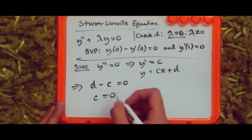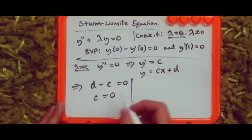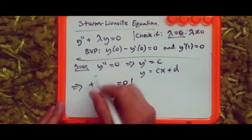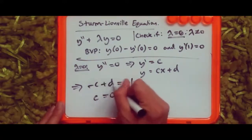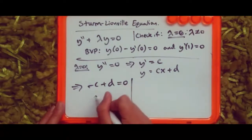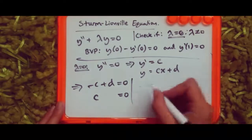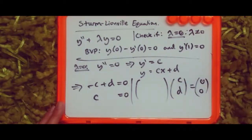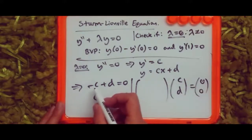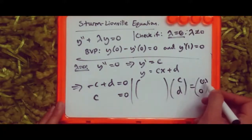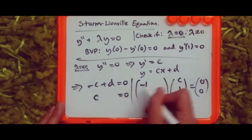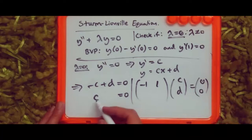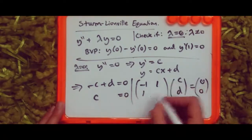To determine if eigenvalues exist, we restructure these into matrix form. Putting them in alphabetical order: minus c plus d equals zero, and c plus zero times d equals zero. In matrix format with vector [c, d], the coefficient matrix has entries: row one is [-1, 1] and row two is [1, 0].